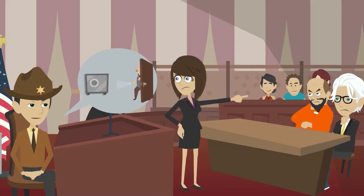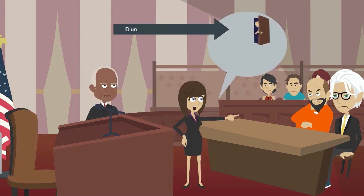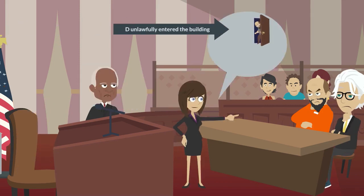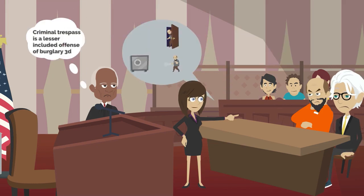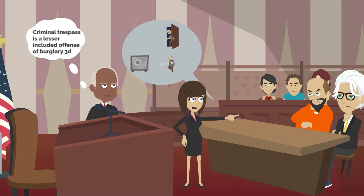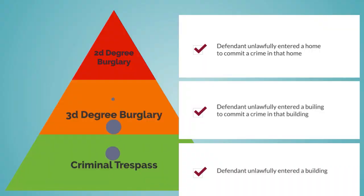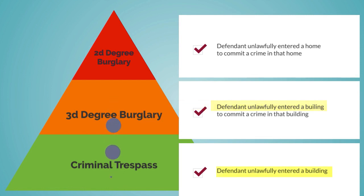David is accused of breaking into a building in order to steal money from a safe. The prosecutor has to show that David unlawfully entered that building, and she must also prove that David entered the building to steal money from the safe. The judge would probably note that criminal trespass is a lesser-included offense of third-degree burglary, because if David is guilty of third-degree burglary, he must have also committed a criminal trespass.